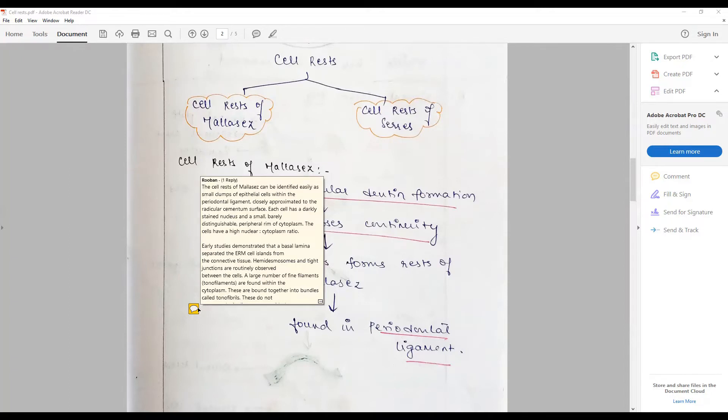Studies demonstrate that a basal lamina is separating these epithelial cell rests from the adjacent ectomesenchymal connective tissue. There are hemidesmosomes and tight junctions that are usually routinely identified between the epithelial cell rests of Malassez.